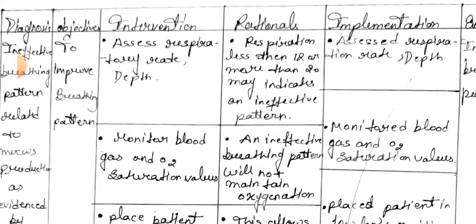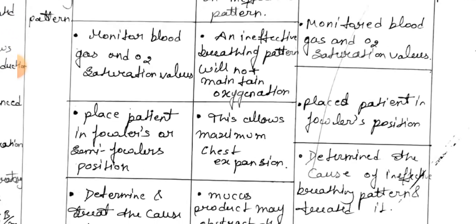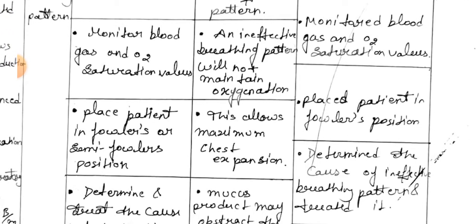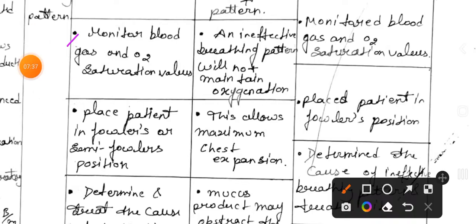Intervention: respiratory rate less than 12 or more than 20 may indicate an ineffective pattern. Intervention and implementation: assess respiration rate and depth. Second intervention: monitor blood gas and O2 saturation values.